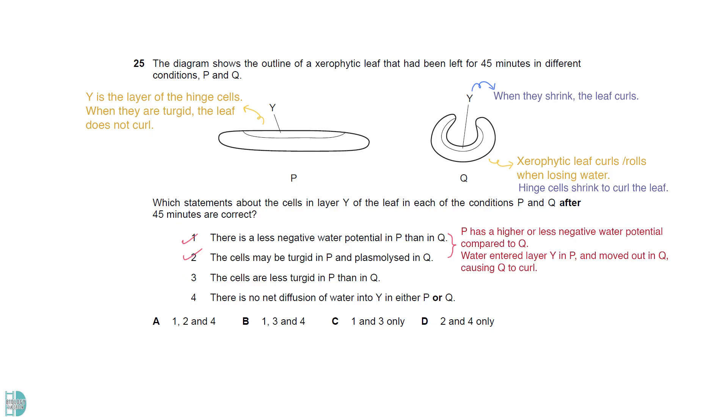P has a higher or less negative water potential compared to Q. Water enters layer Y in P, and moves out in Q, causing Q to curve but not P. 3 is wrong, as it is an opposite statement from 1 and 2. 4 is correct, as the question wants a statement describing the condition after 45 minutes. There was a net movement of water in the beginning, but after 45 minutes, it would have reached an equilibrium. So there should not be any net movement of water anymore.